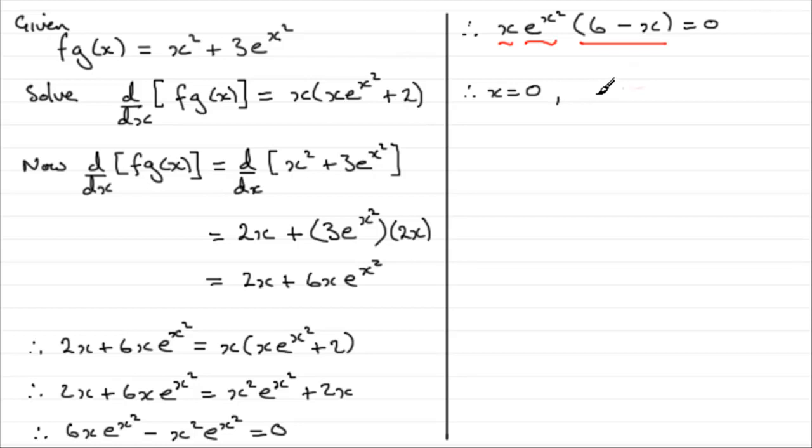Or we can have 6 minus x equals 0. 6 minus x equals 0. And what does that lead on to? Well, x would clearly be 6. So, therefore, x would equal 6. So, we've got two answers. Let's just repeat this one here. x equals 0. Or we have x equals 6.